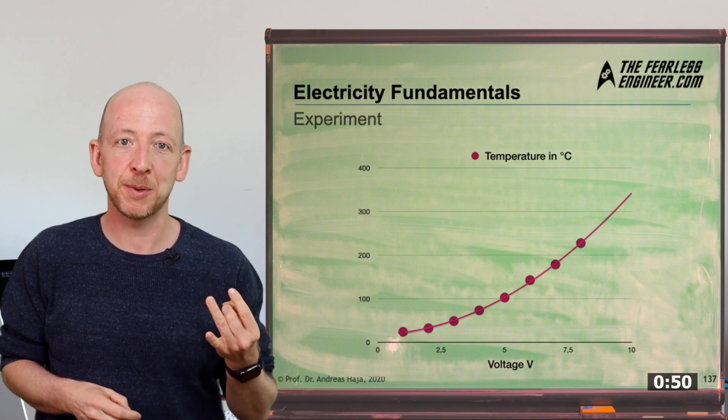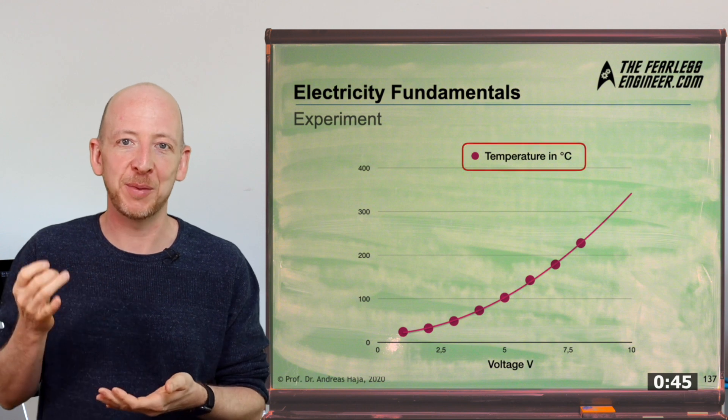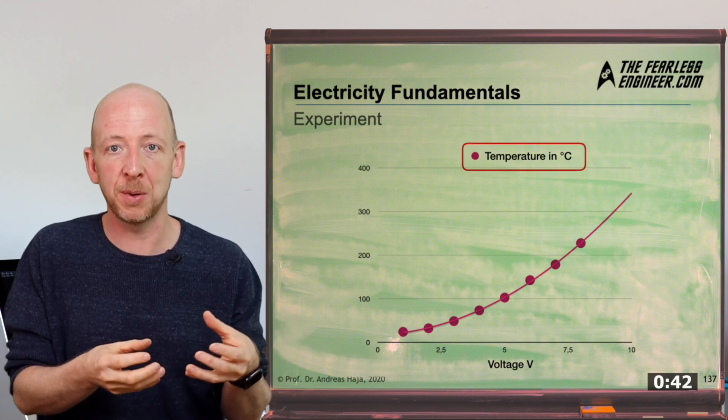Since the resistance temperature is directly related to the power, the final thing we look at is the temperature curve. The curve you can see here is almost identical to the power curve we just looked at.